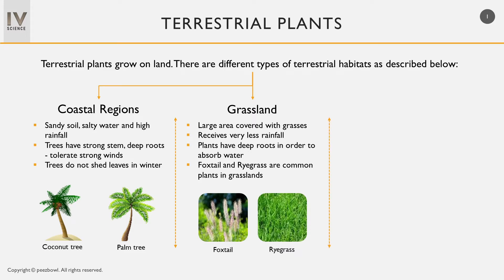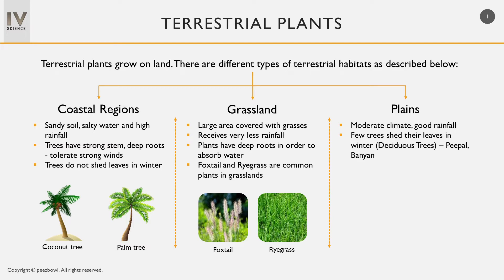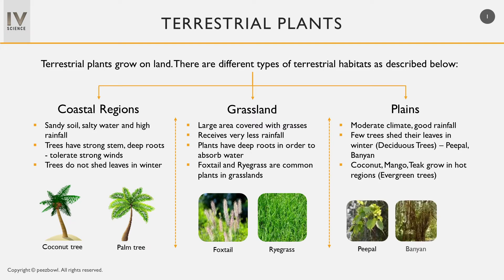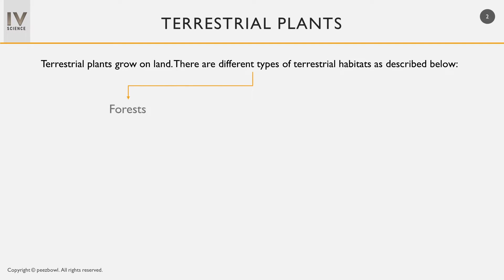The third type of terrestrial habitat is plains. Plains have a moderate climate and they receive a good amount of rainfall. Few trees in the plains shed their leaves in winter, such as peepal and banyan — these trees are called deciduous trees. However, few trees such as coconut, mango, and teak grow in hot regions and are called evergreen trees because they do not shed their leaves in winter. So peepal, banyan, and teak are common trees found in plains.